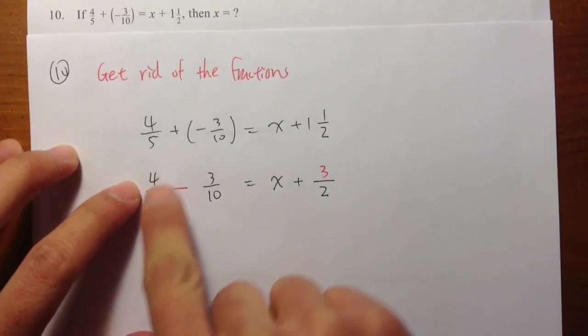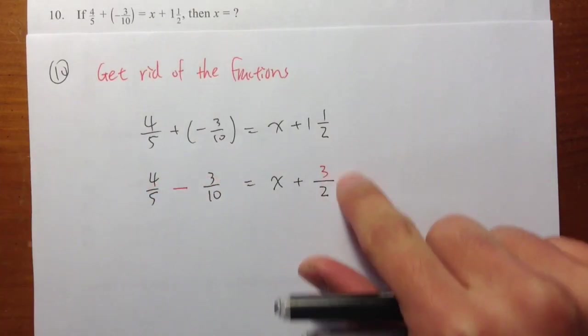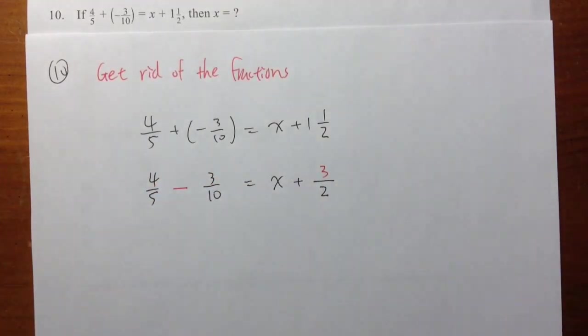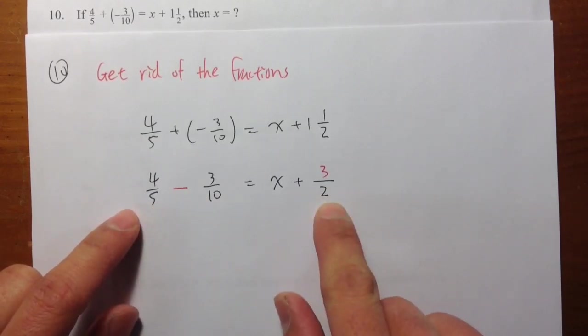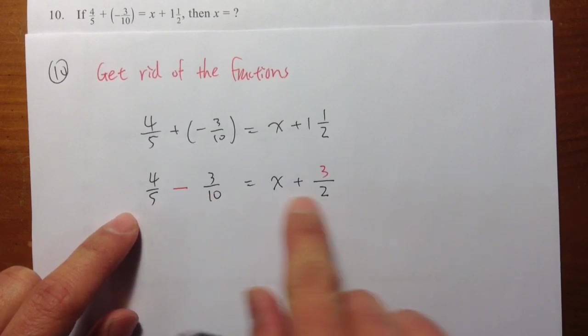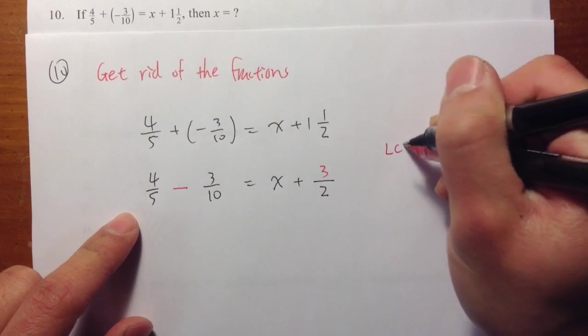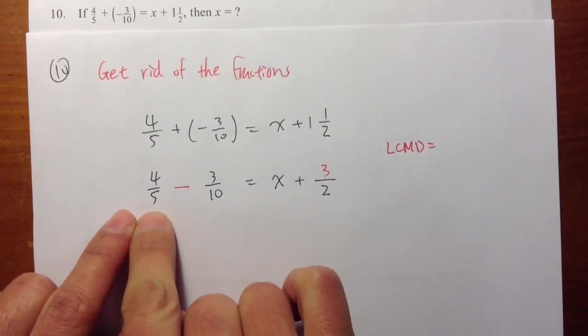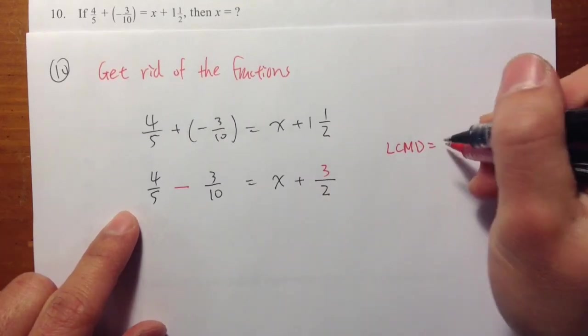So now you have 3 fractions: 4 over 5, 3 over 10, and 3 over 2. So I want to get rid of the fraction. This is how we are going to do it. Pay attention to the denominators. Pay attention to the denominators. And let's ask ourselves, what's the lowest common multiple of all these denominators? 5, 10, and 2.